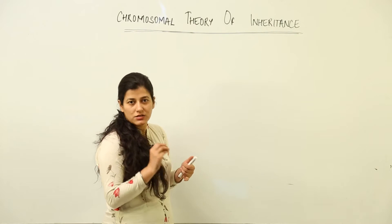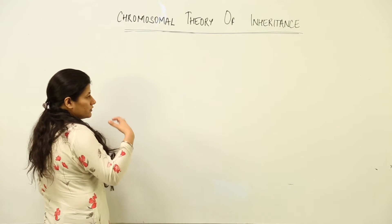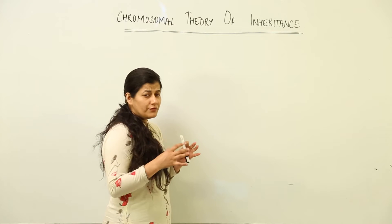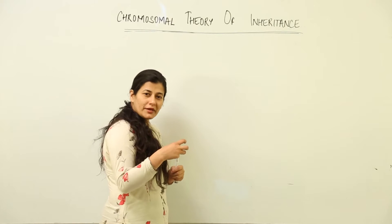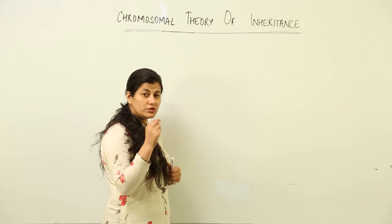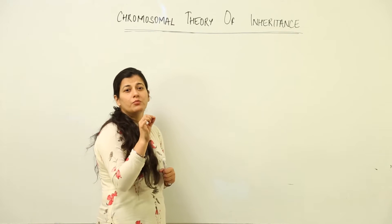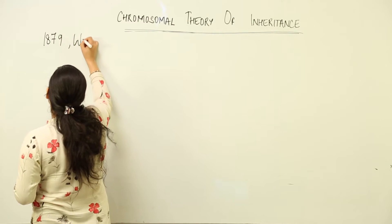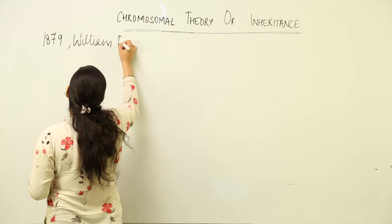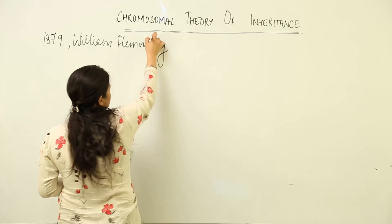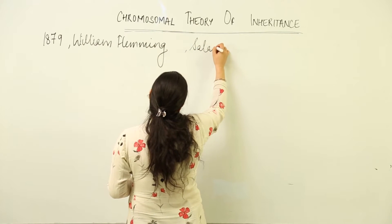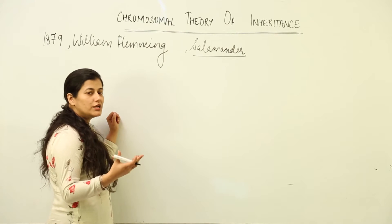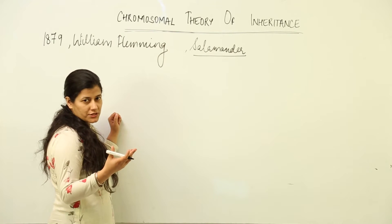As cytological studies grew and with the advent of microscopy in living cell study, we were coming slowly and steadily to the microscopic level. In 1879, William Fleming was the first person who saw the chromosomes in salamander cells. Salamander is an amphibian, so he observed the chromosomes there.